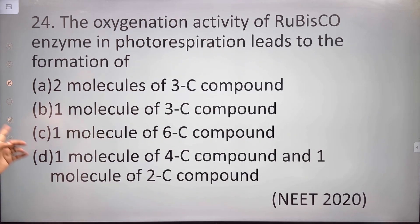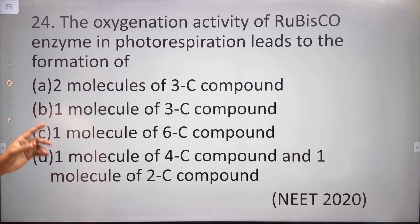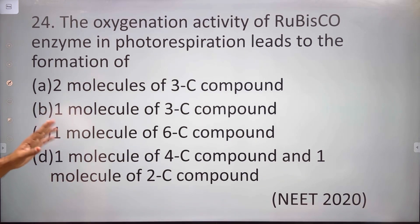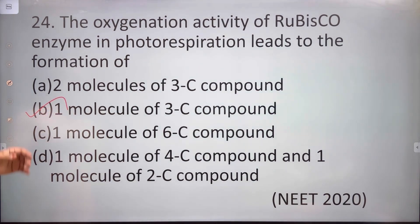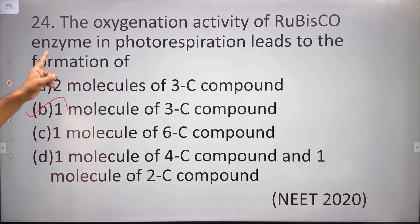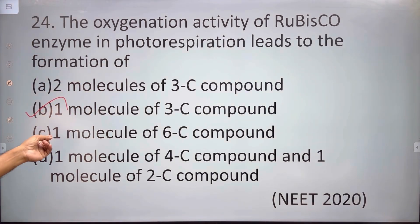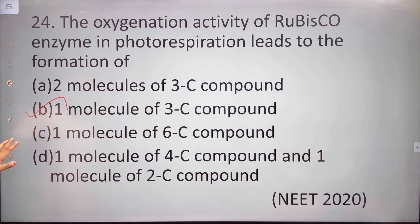The oxygenation activity of Rubisco enzyme in photorespiration leads to the formation of 1 molecule of 3-carbon compound and 1 molecule of 2-carbon compound. So the answer is option B.